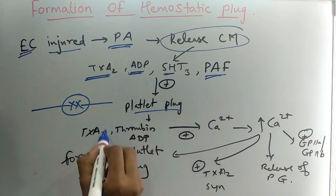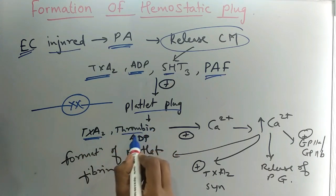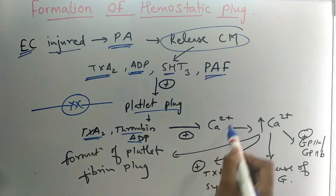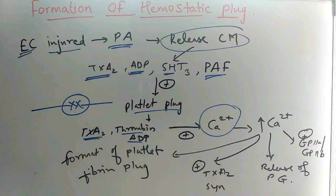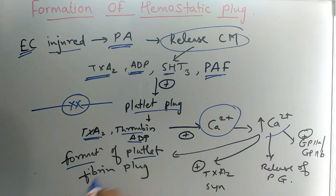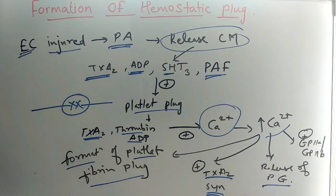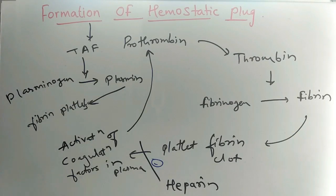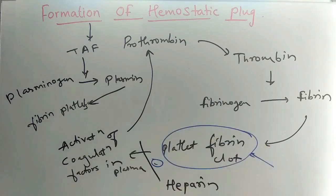Thromboxane A2, thrombin, and ADP stimulate the release of intracellular calcium. Once intracellular calcium levels increase, this leads to platelet fibrin plug formation, thromboxane A2 synthesis, release of platelet granules, and release of glycoprotein 2A and 2B.